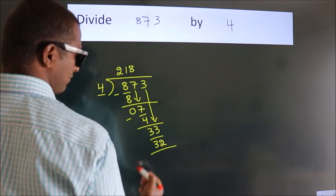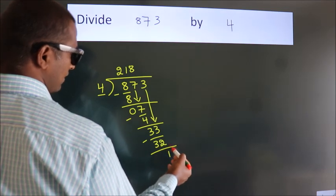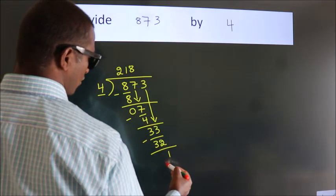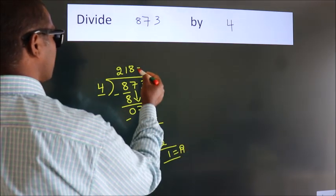Now, we subtract. We get 1. After this, no more numbers to bring it down. So, we stop here. This is our remainder. This is our quotient.